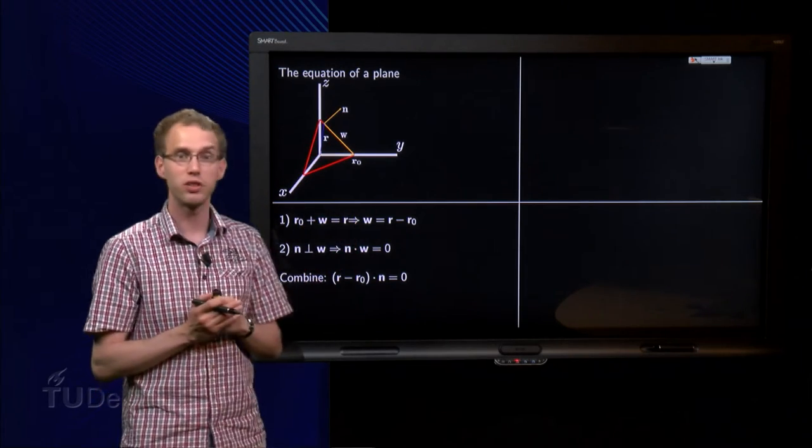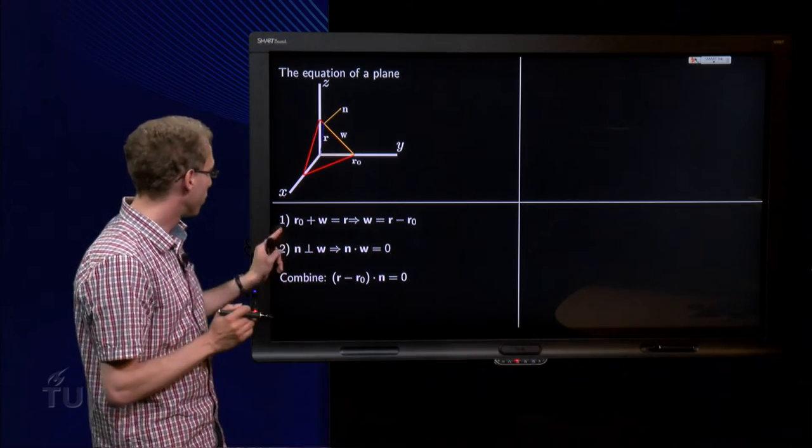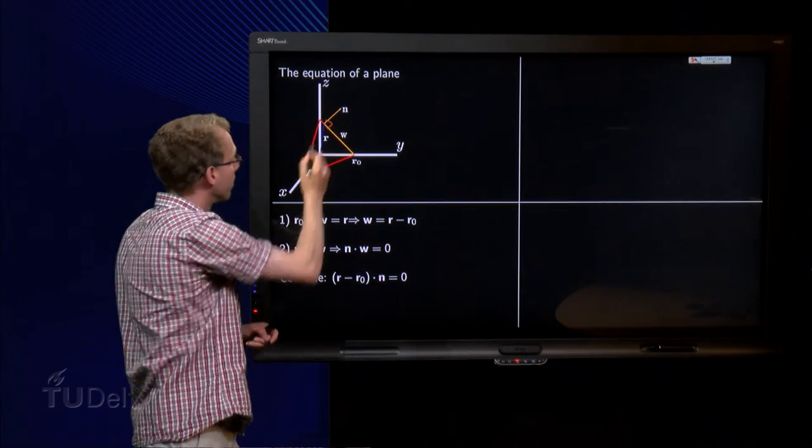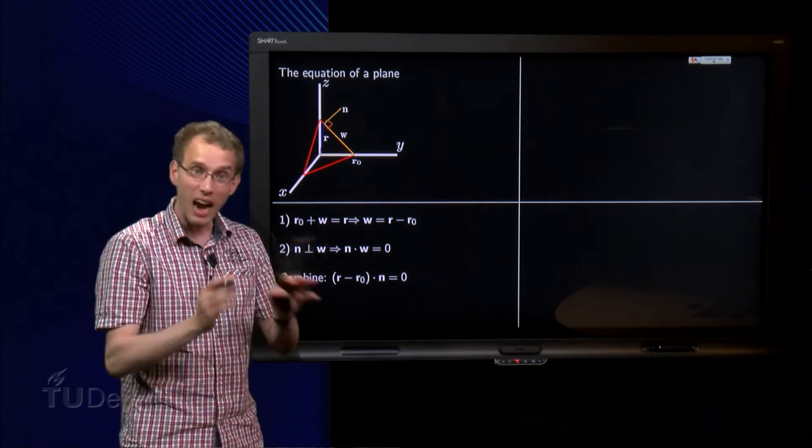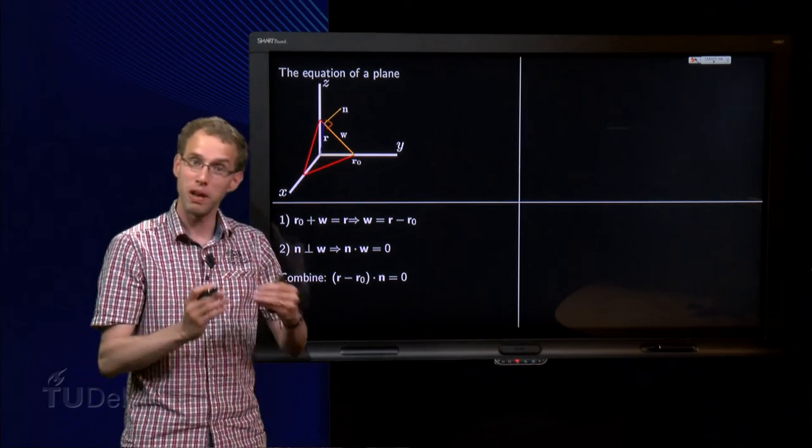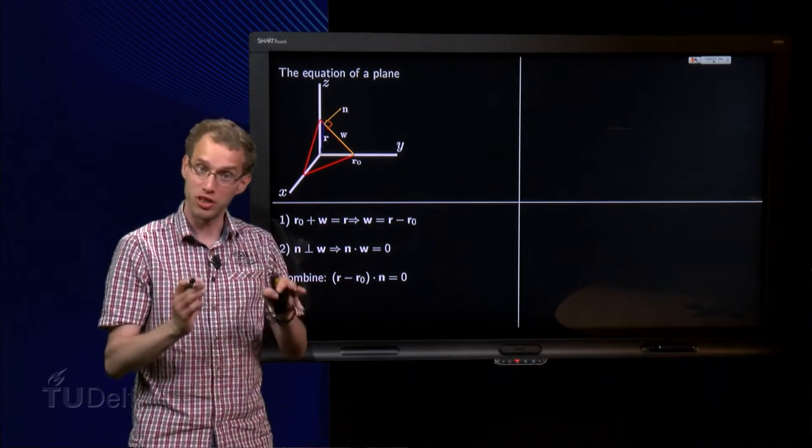Furthermore, we know that the normal n is orthogonal to w, wherever your r is, it is always orthogonal because w is in the plane, so the inner product equals 0.